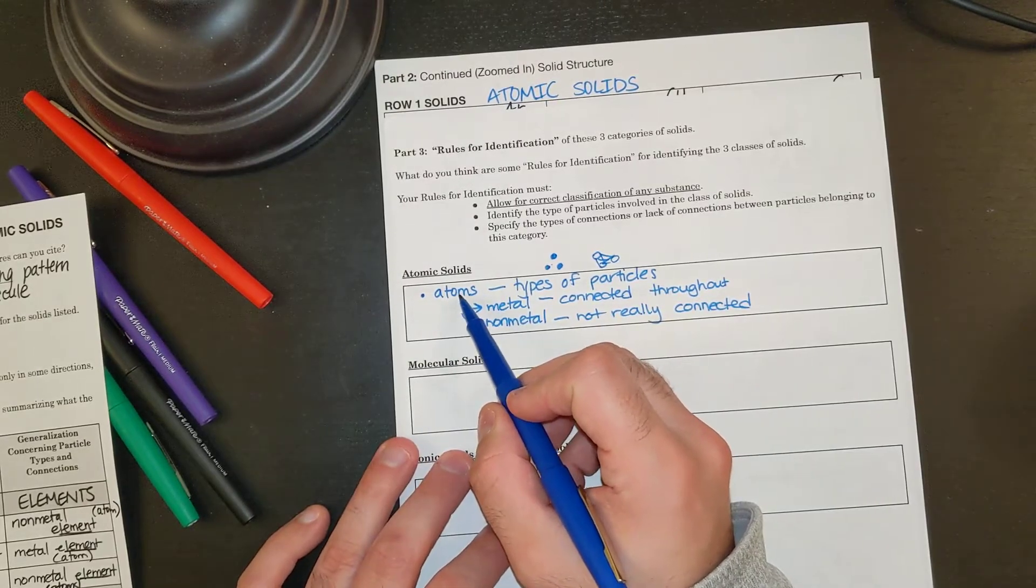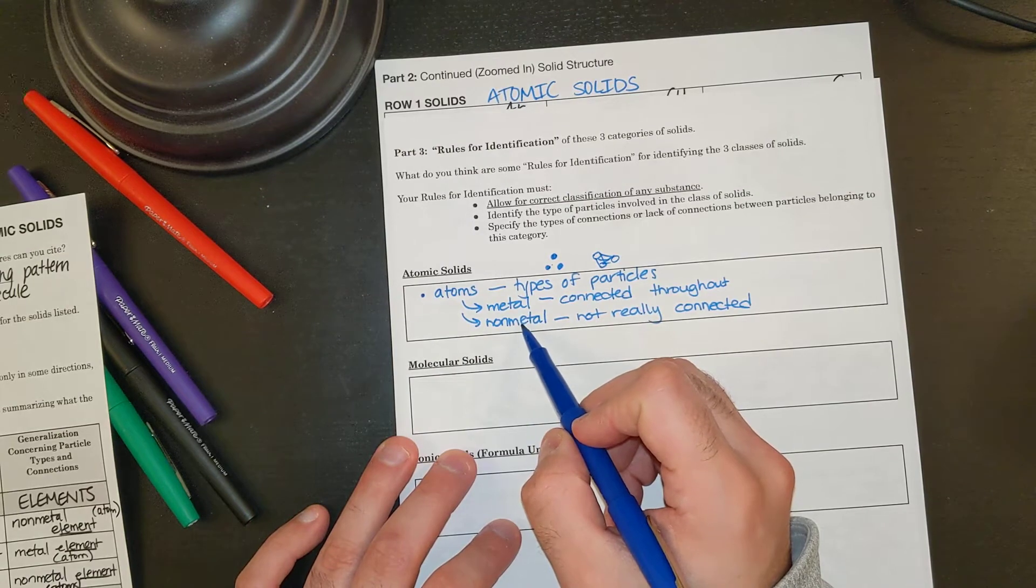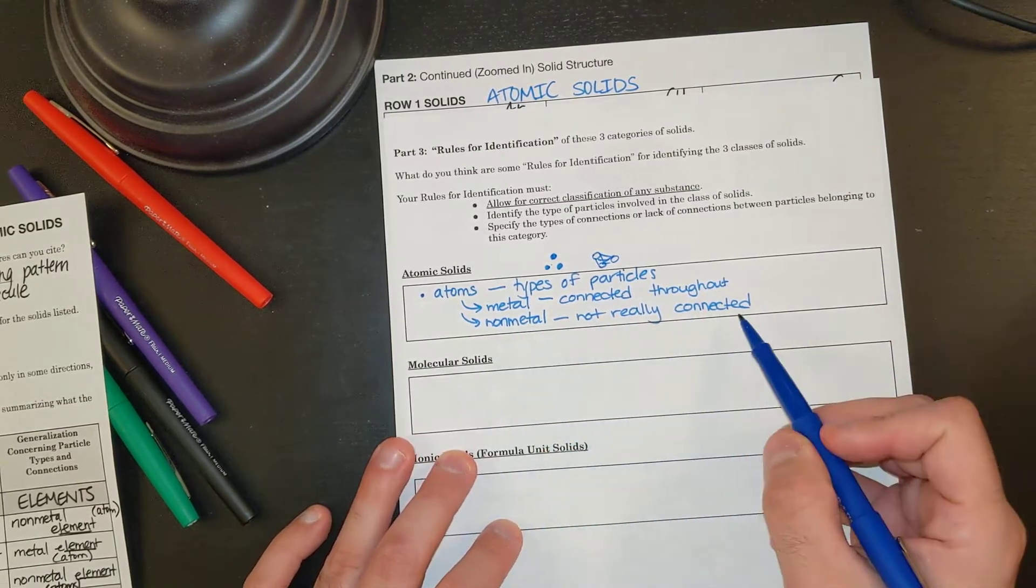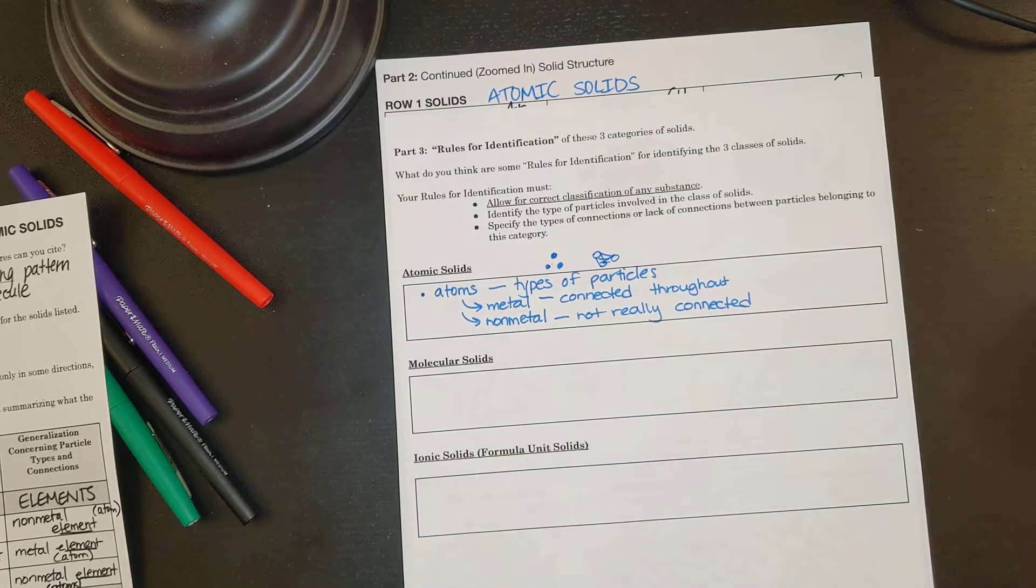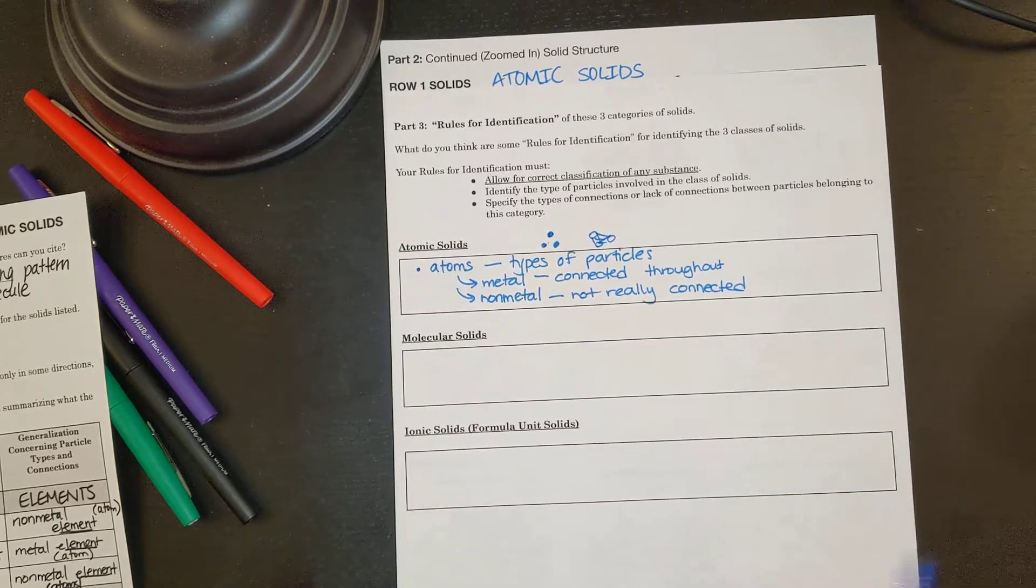So here are some generalization rules for atomic solids. They have to be made up of atoms, there could be metal or non-metals. Metals are going to be connected throughout, non-metals, not really connected.